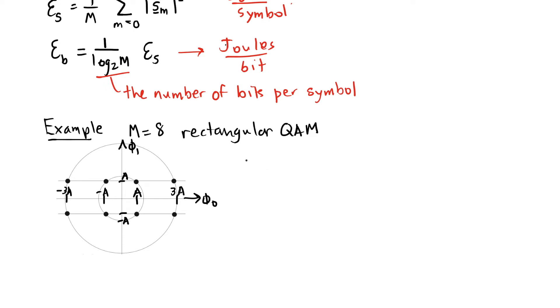So the energy per symbol, average energy per symbol for m equals 8, I'm going to divide 1 eighth by the sum of all of the squared distances from the origin. For this first symbol, I'm going to have this distance squared.